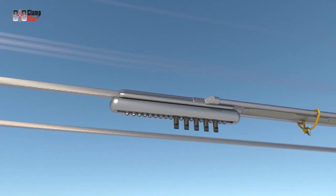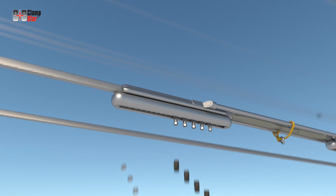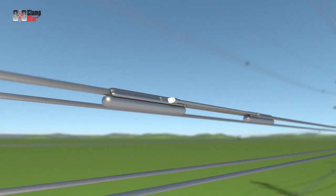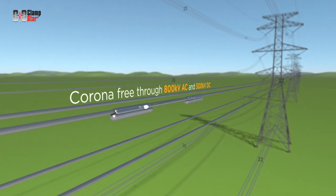Repeat the process on the other head unit. This splice is now permanently corrected and corona-free through 800 kV AC and 500 kV DC.